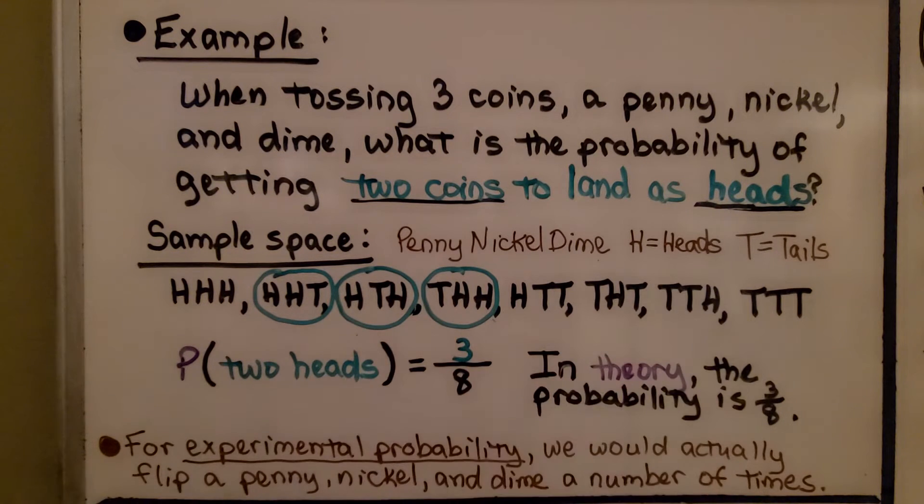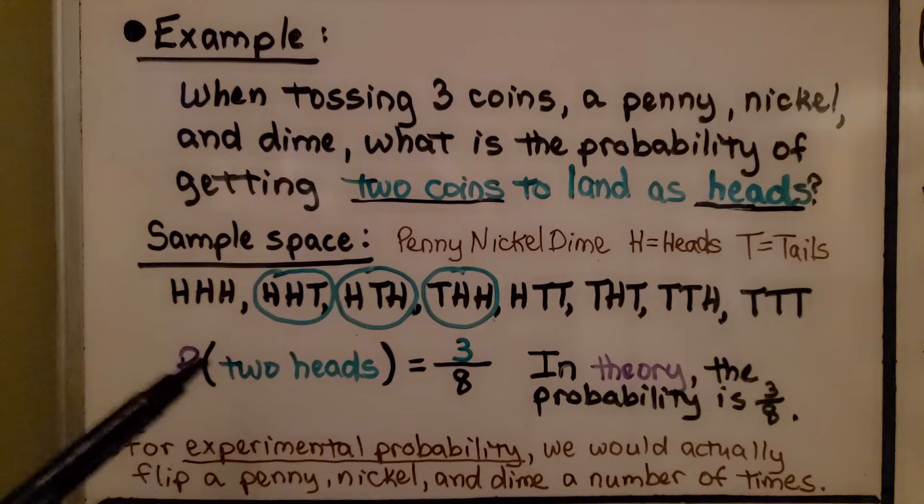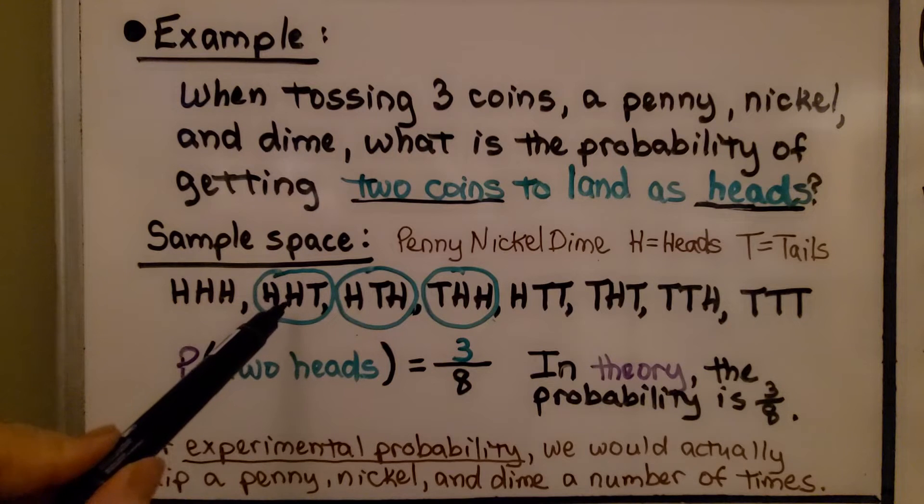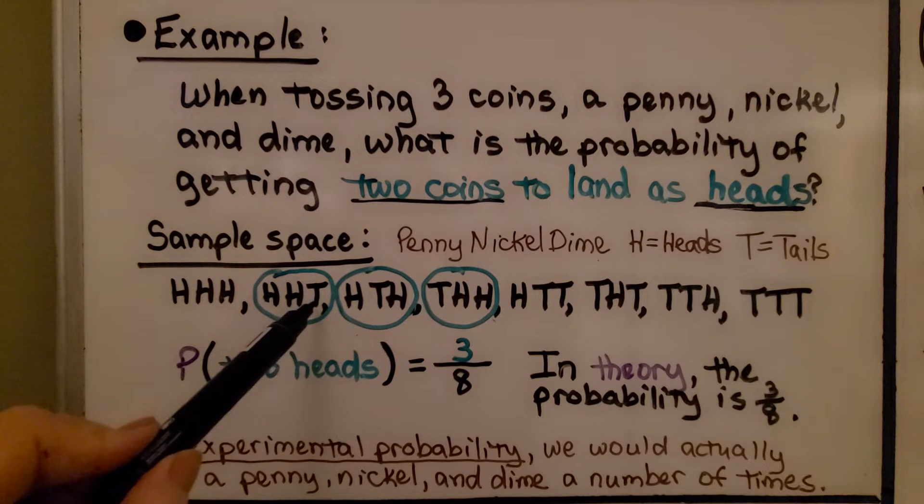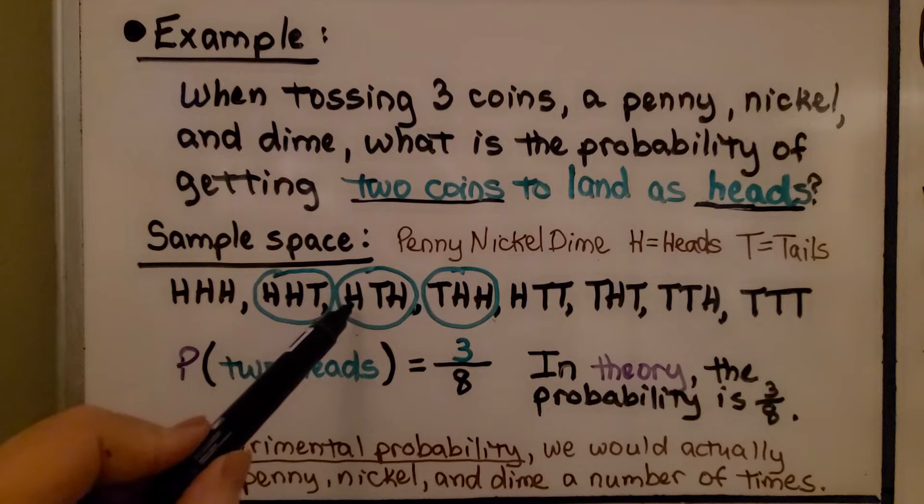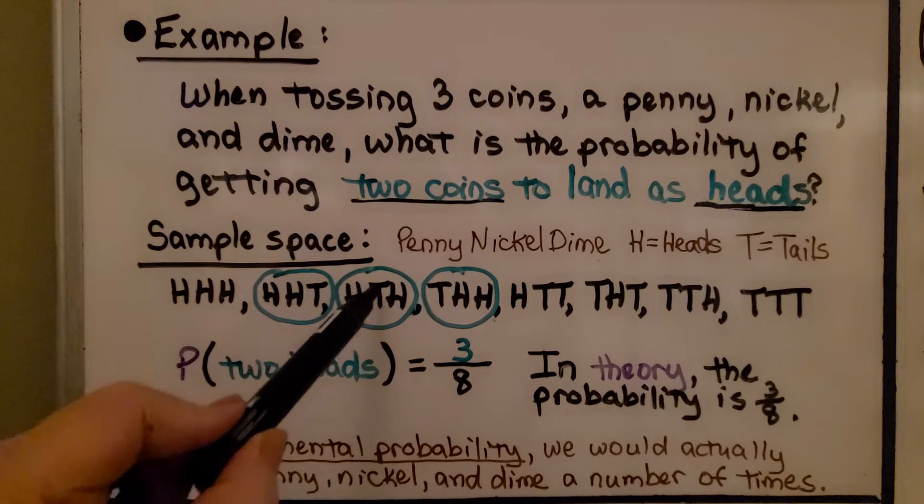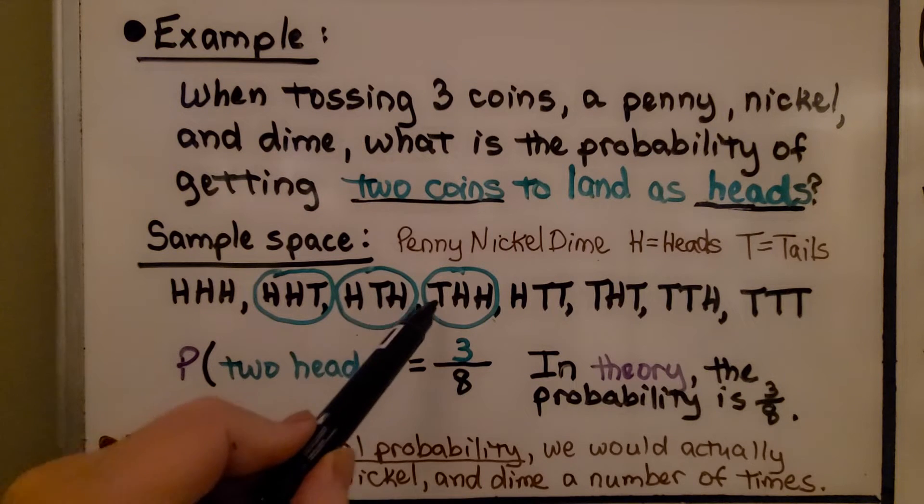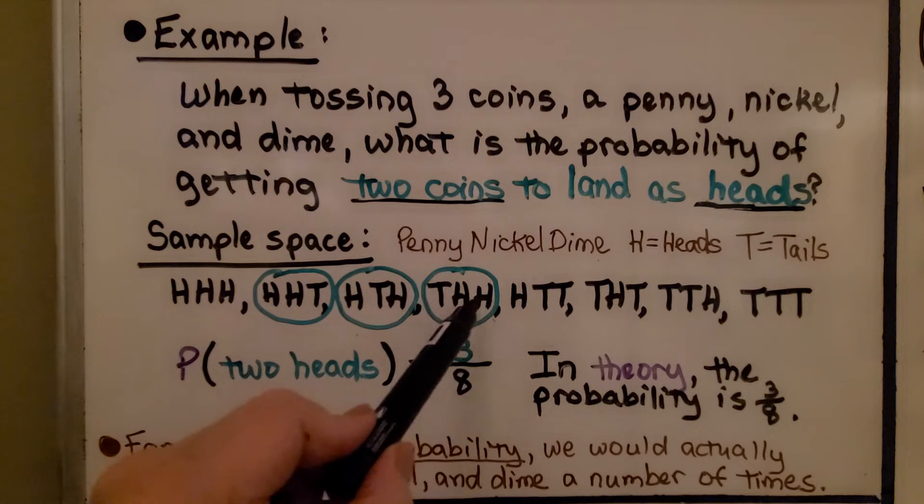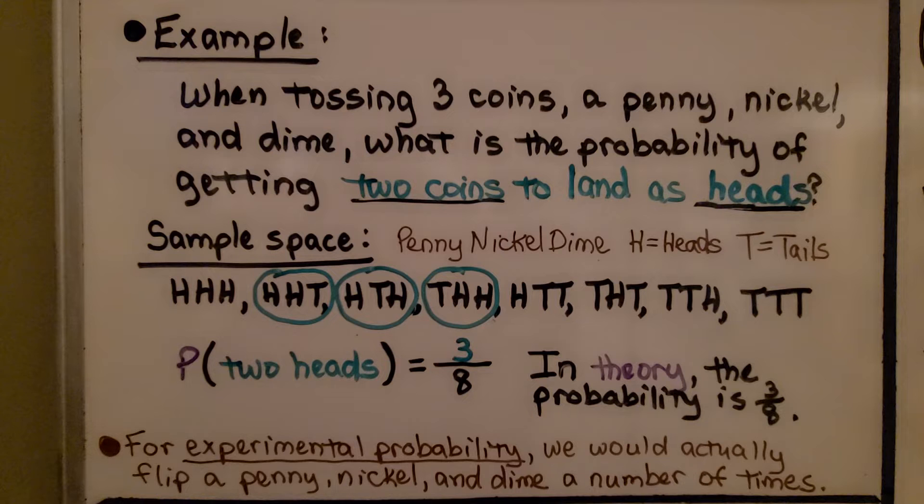We're going to use H for heads and T for tails. We've got all three penny, nickel, and dime land heads, or the penny and nickel land heads and the dime lands tails. We have the penny as heads, the nickel as tails, the dime as heads. We've got the penny as tails and the nickel and dime as heads.